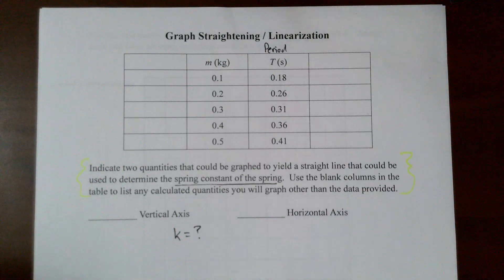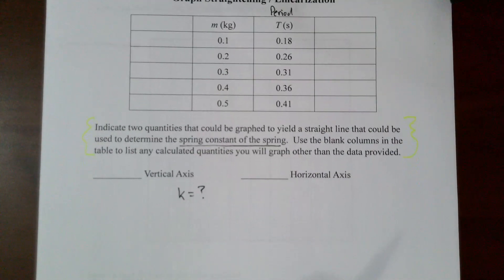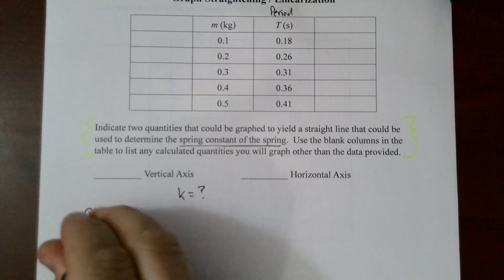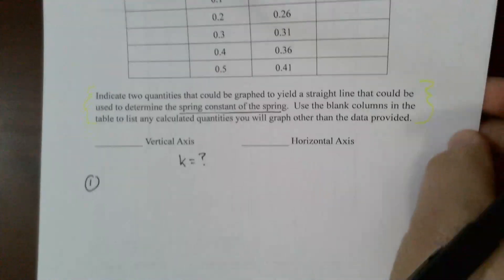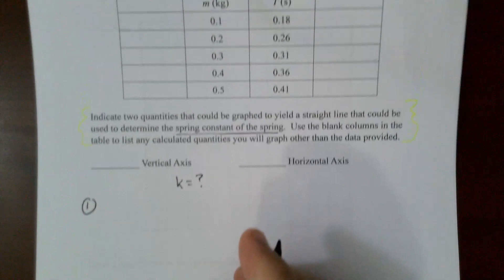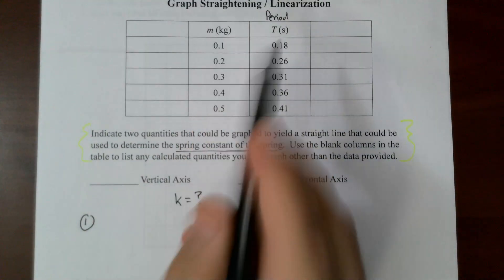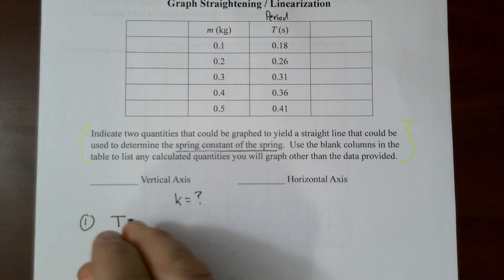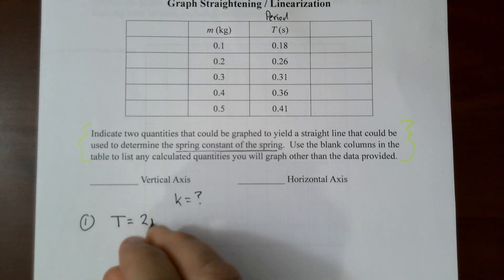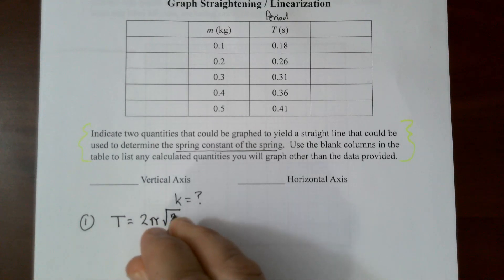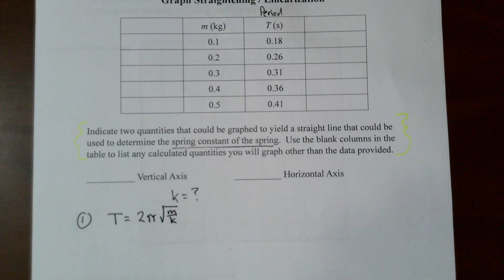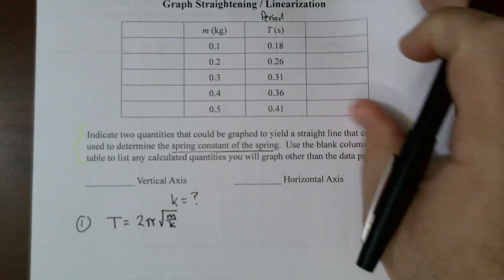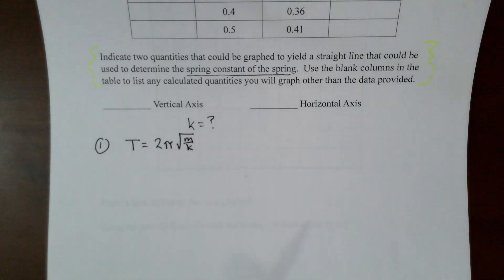Our starting point needs to be the relevant physics. The equation that relates the two variables — mass on a spring and its period — is: T = 2π√(m/k). That looks complicated and scary, and that's because I'm choosing a hard example to really illustrate the skill you need.